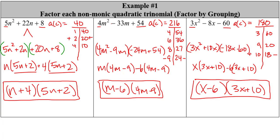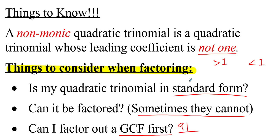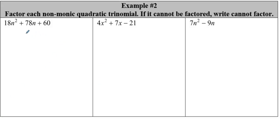Example number 2: factor each non-monic quadratic trinomial, and if it cannot be factored, write 'cannot be factored.' Looking at 18n² + 78n + 60 — is there a GCF? We can't take out a variable, but we can take out a number. The GCF of this expression is 6.